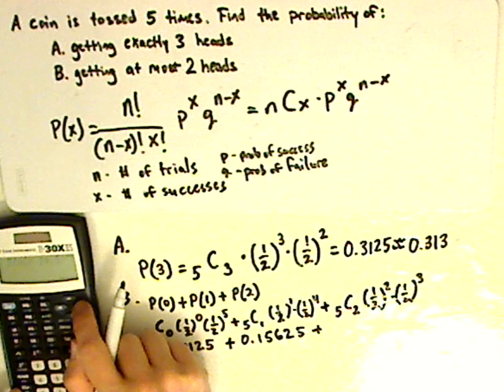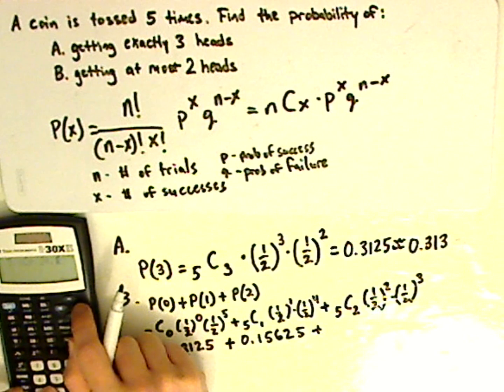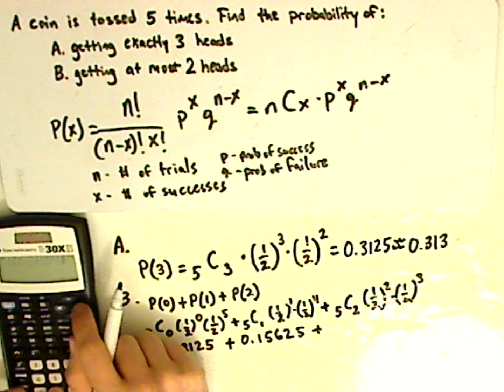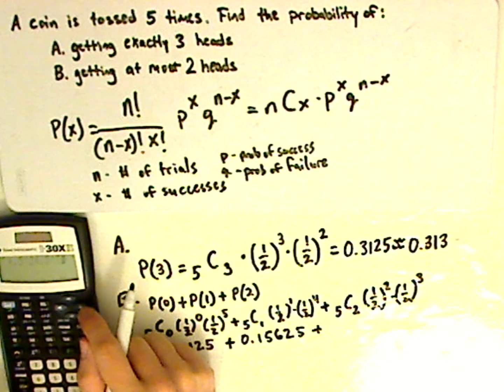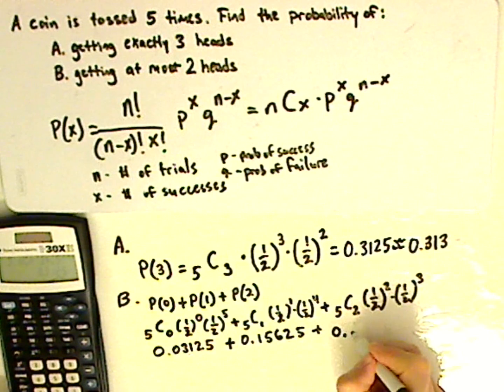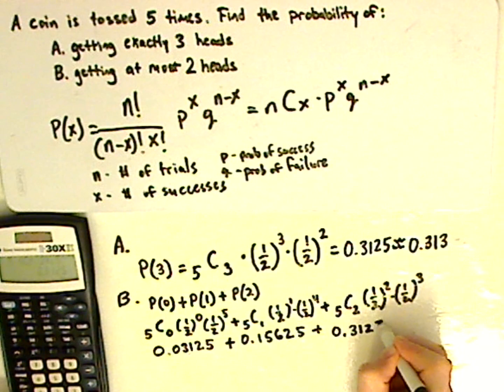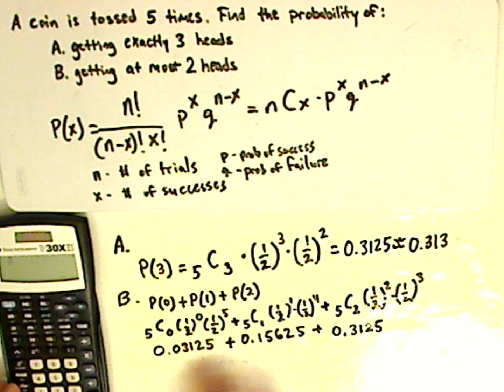5 combinations 2 times 1 half or 0.5 raised to the 2nd power times 0.5 raised to the 3rd power. And that gives me 0.3125.